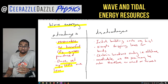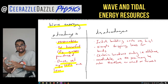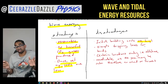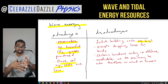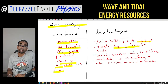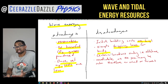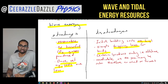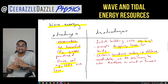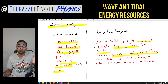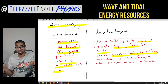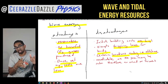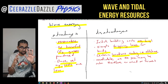Disadvantages of wave energy: the initial building costs are quite high — placing them in the water costs quite a bit of money. Having many of them in the water can disrupt boats and their shipping lanes. They can only be used in certain locations — it needs to be offshore. Finally, it's unreliable: if the sea is calm there may be no waves, so you won't generate much electricity.